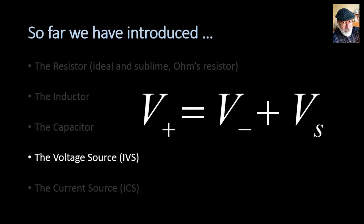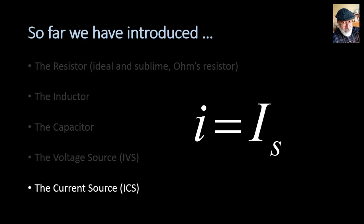What others? The independent voltage source, IVS. The V plus is the V minus of the source plus the value of the source. Or if you prefer, V plus minus V minus is VS. Which is a way of saying the higher terminal is above the lower terminal by the value of the source, whatever the source says. 5 volts, 10 volts, whatever. And the other one is the independent ideal current source. The value of the current through that source is whatever the source says IS, could even be a function of time.